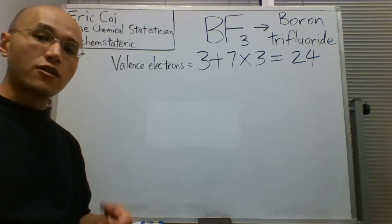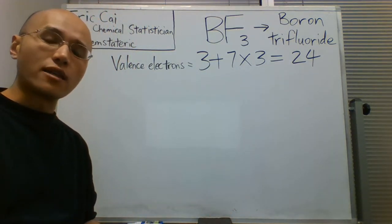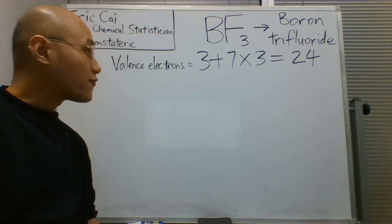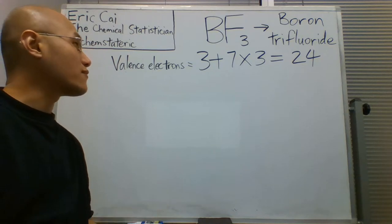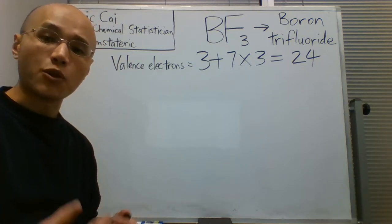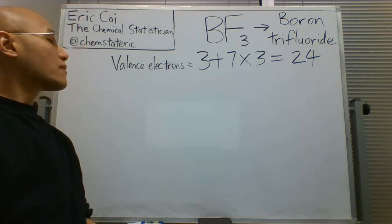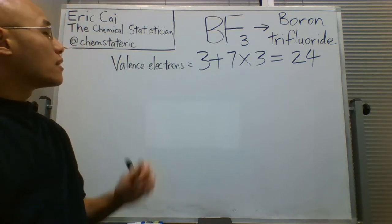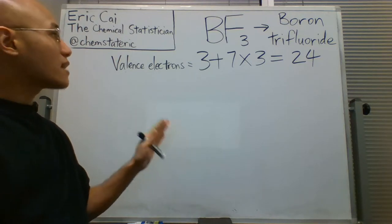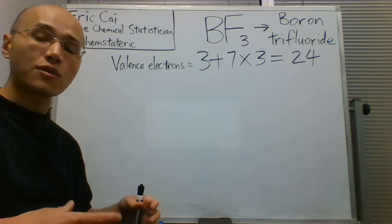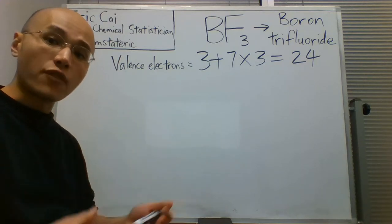Next, we need to think about the geometry, and as usual, I encourage you to think about the electronegativities. Fluorine is more electronegative than boron, which we know from the trends in the periodic table. So I encourage you to put the less electronegative atom in the center, and the more electronegative atoms in the periphery.